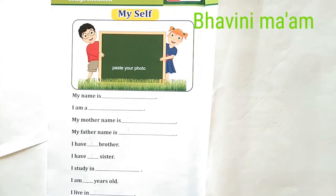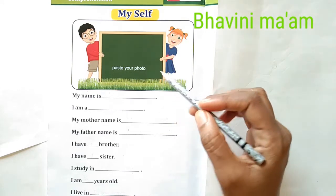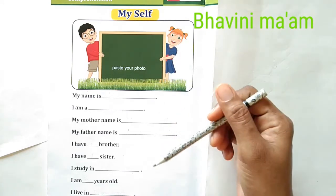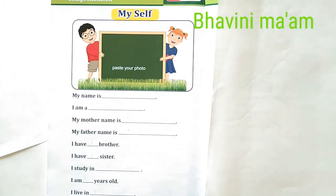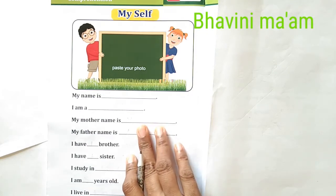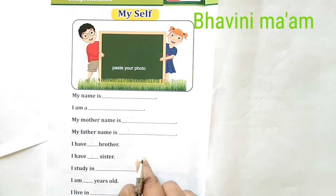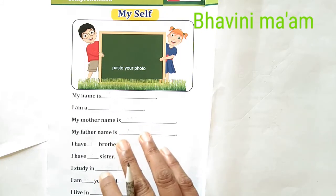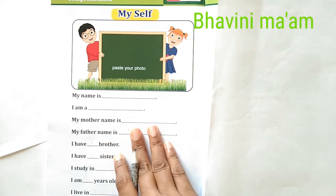My Self means that you have to tell yourself about yourself. What is your name? What is your boy or girl? What is your mother? What is your father? Where are you? What is your sister? What is your brother? What are you studying? How many years are you? How many years — you have to tell yourself about yourself. Ok?